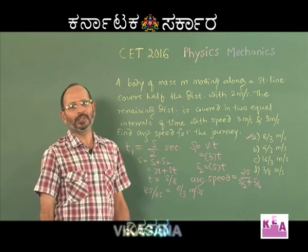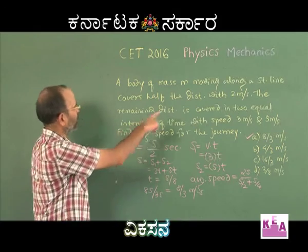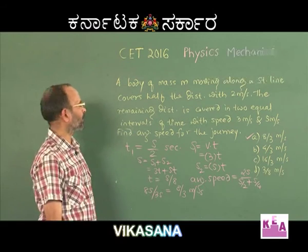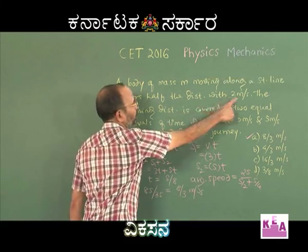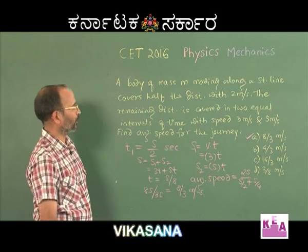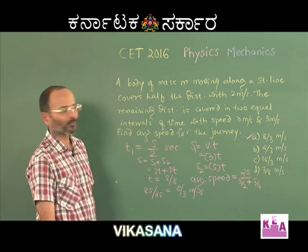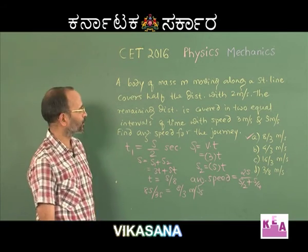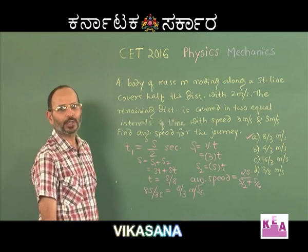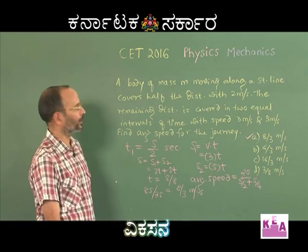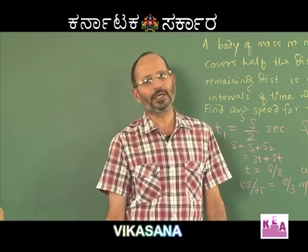That was the full method, which may be slightly longer. There is also a shortcut suggested by some professors: the first distance is covered at 2 m/s and the other two at 3 and 5 m/s, so the answer should not be less than 2 and cannot be more than 5. Option D (3/8 m/s) is less than 1 — ruled out. Option C (16/3 m/s) is more than 5 — ruled out. Option B (4/3 m/s) is less than 2 — ruled out. Only option A, which is 8/3 m/s, is perfectly correct.